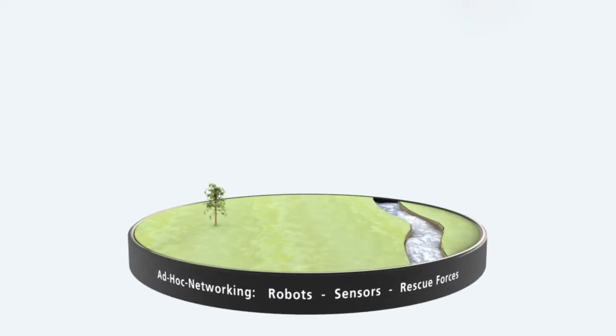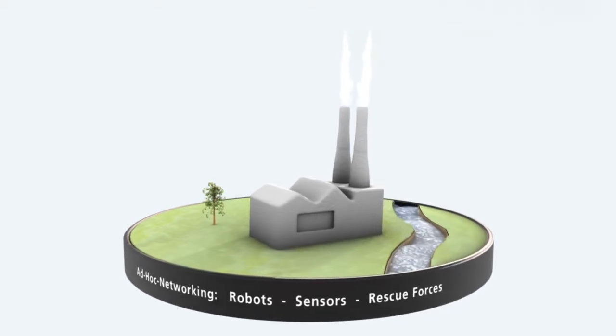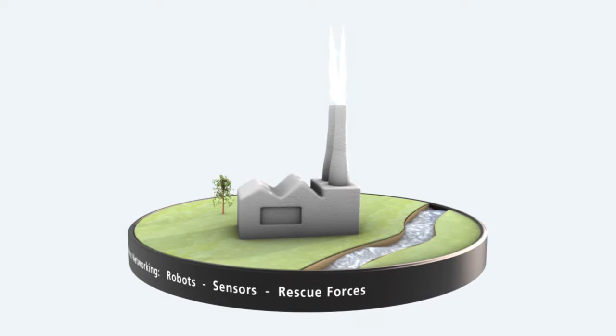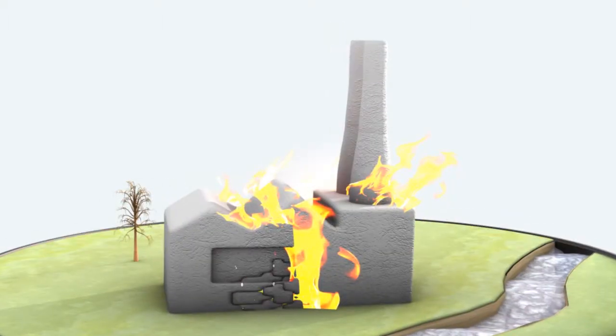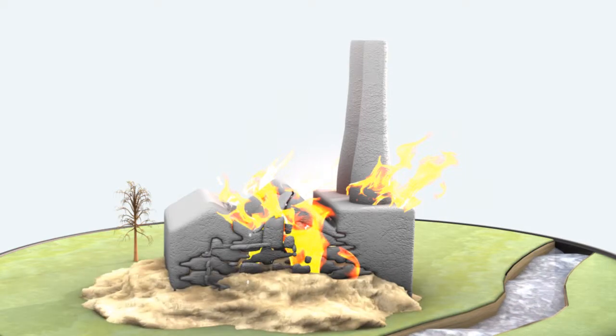A major challenge in managing extensive natural disasters is the fast and comprehensive reconnaissance of the actual situation. This is exemplified by an industrial plant where fire has broken out and is spreading over the building. Parts of the building threaten to collapse and break into pieces.